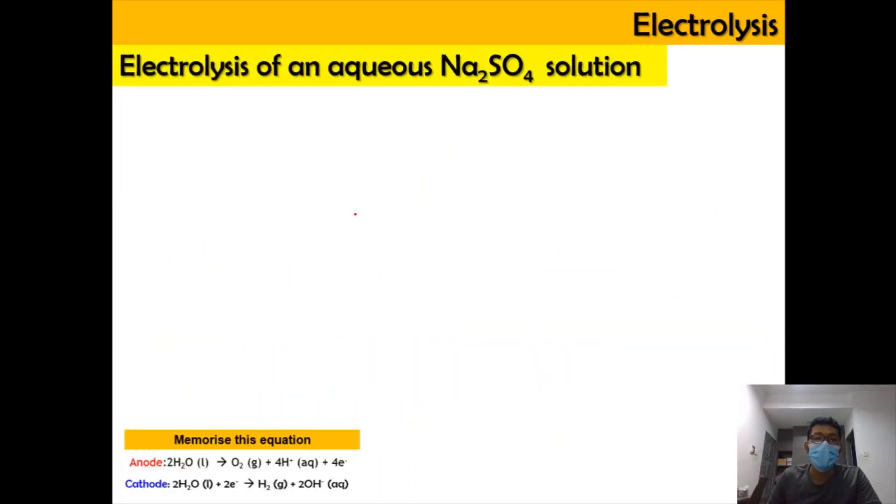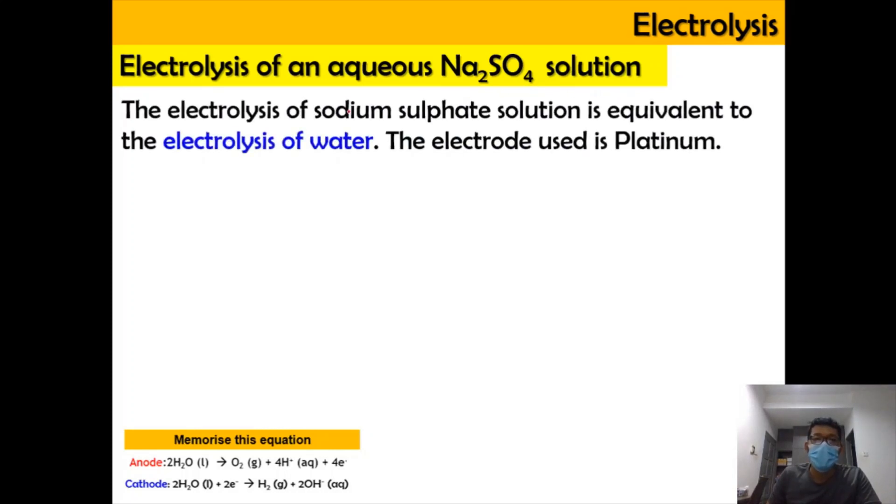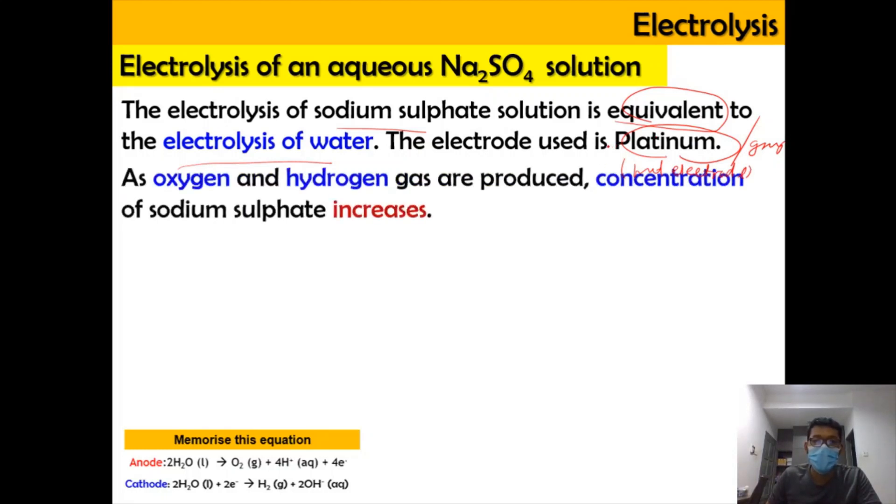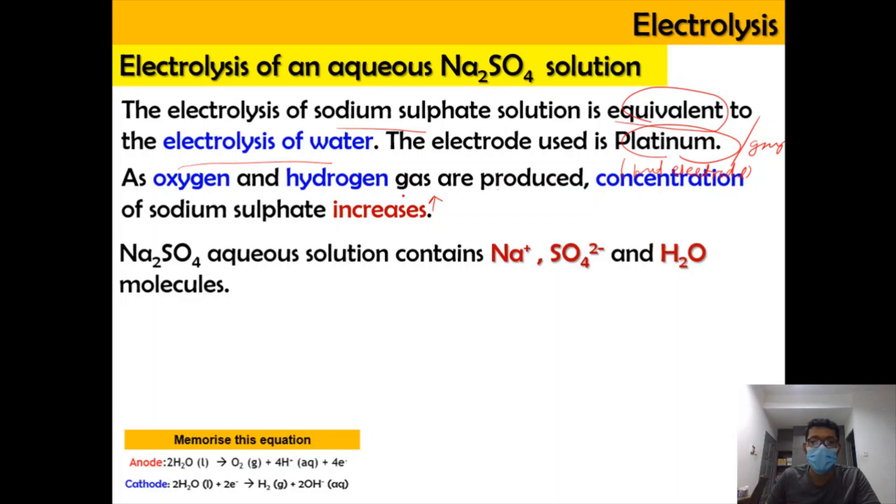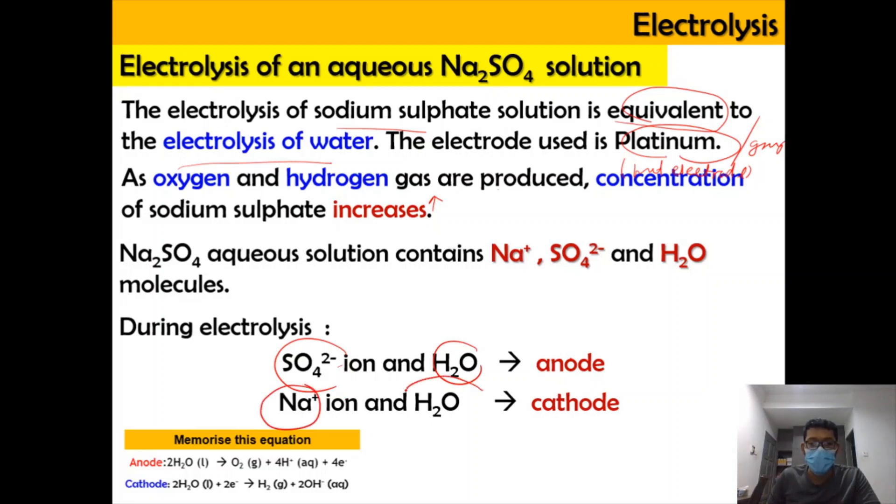Now let's look into the situation of the aqueous sodium sulfate solution. The electrolysis of sodium sulfate solution is basically similar. It's equivalent to the electrolysis of water where the water going to be reduced at cathode and water going to be oxidized at anode, and the electrode used here must be platinum or graphite or any inert electrode. This one needs to be inert. You know that in the electrolysis of water, oxygen and hydrogen gas are produced and this causes the concentration of sodium sulfate to be increases because water are reducing.